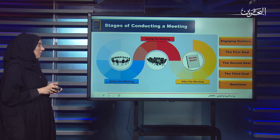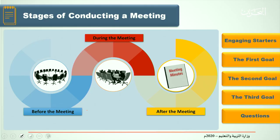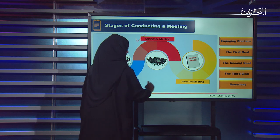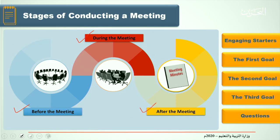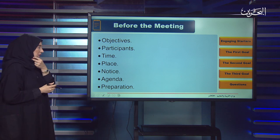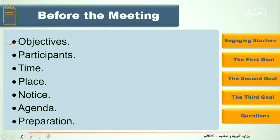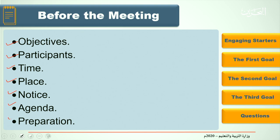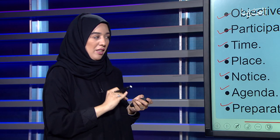Let's start with our first objective: Stages of Conducting a Meeting. As we mentioned, just like the party, the meeting also passes through three stages — something done before the meeting, issues addressed during the meeting, and actions taken after the meeting. Before the meeting, we must know the objectives, participants, time, place, notice, agenda, and final preparation.